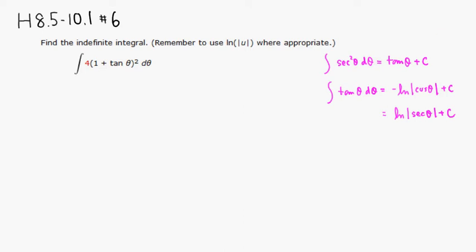So here, first thing we're going to place this 4 in front, so we have 4 times the integral. I'm going to multiply this out: 1 squared is 1, 2 times 1 times tangent is 2 tangent of theta, plus tangent squared of theta, with respect to theta.